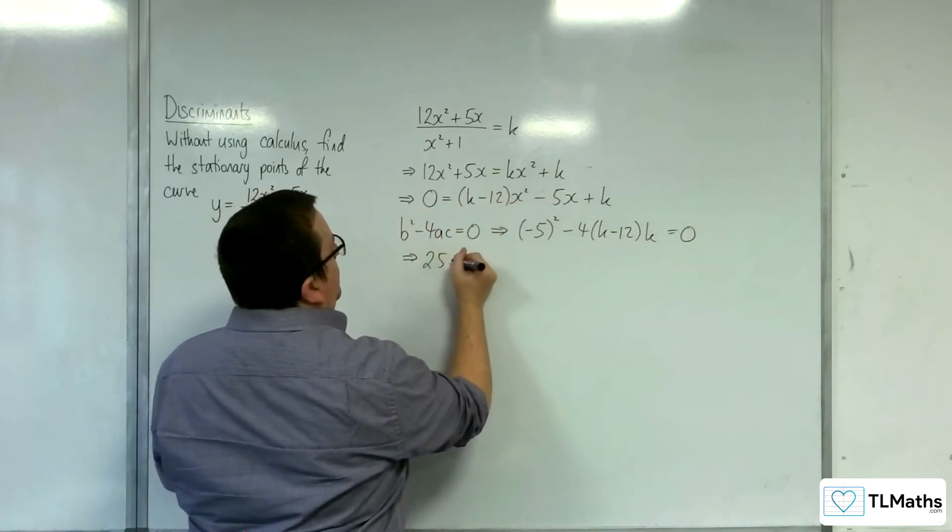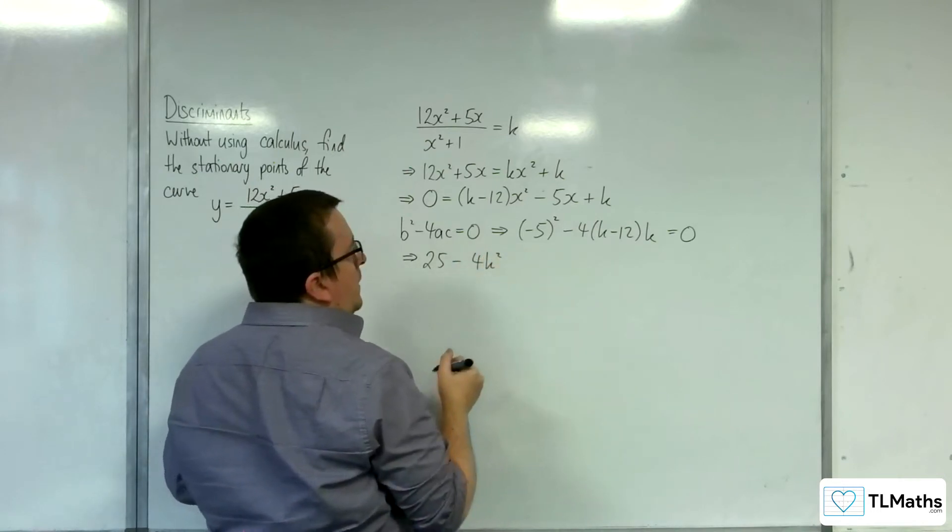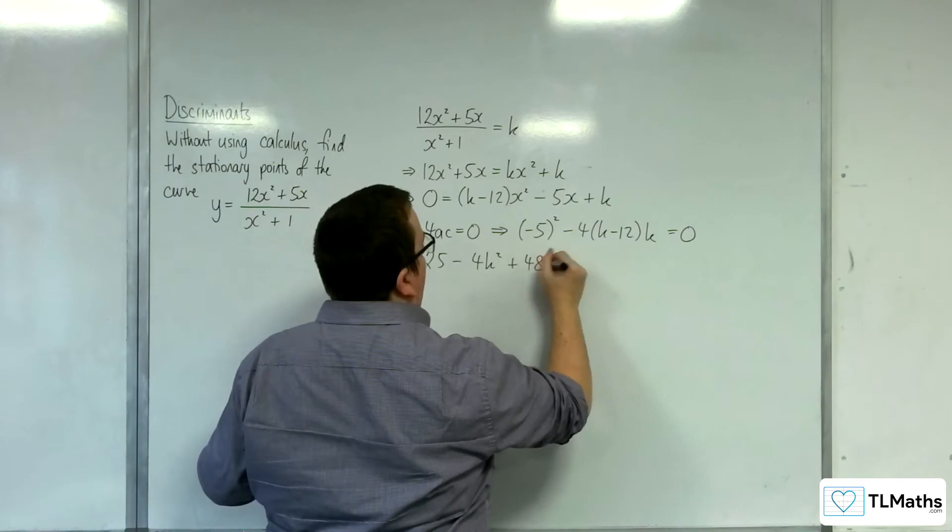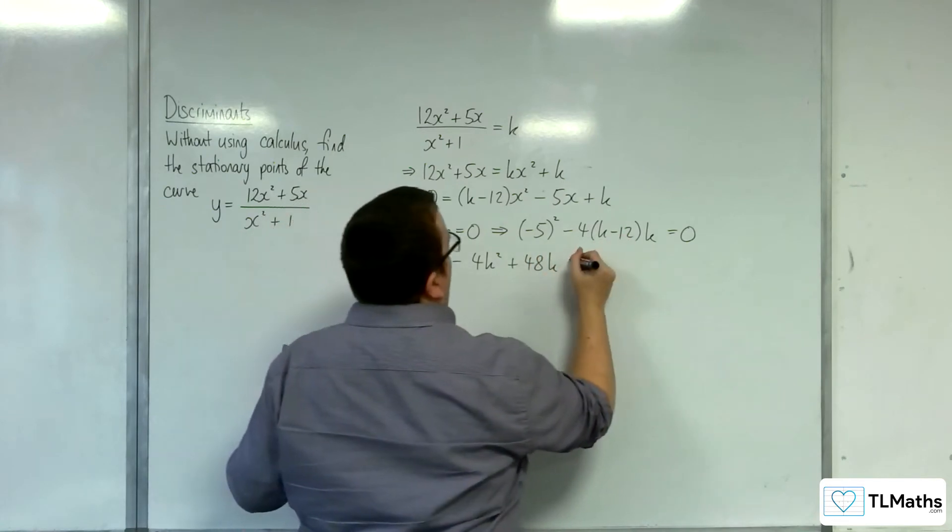So, 25 take away 4k squared plus 48k, so minus 4 times minus 12k, is equal to 0.